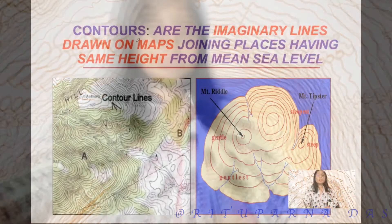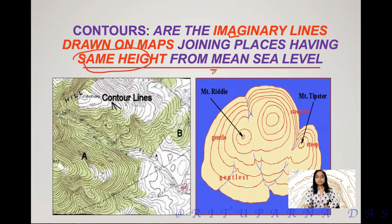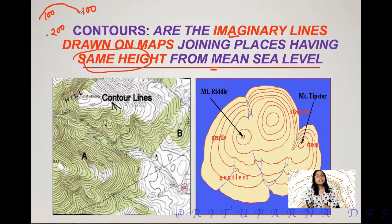What is the correct definition of the contour lines? Contour lines are the imaginary lines drawn on a map joining places having the same height from the mean sea level. For example, suppose here is 100, here is 200, and here is again 100. So what we have to do is join the places having the same height — that will be the contour lines. If you observe carefully, these contour lines run parallel, meaning they can come very close to each other but they cannot intersect each other.